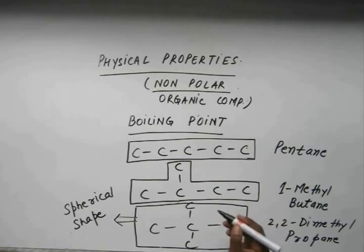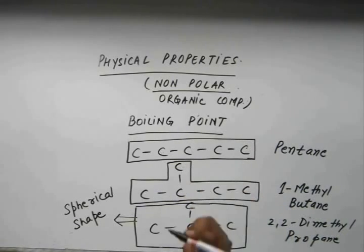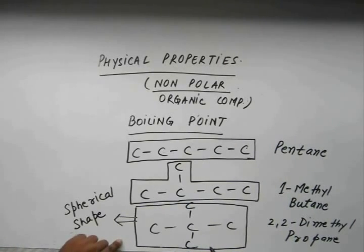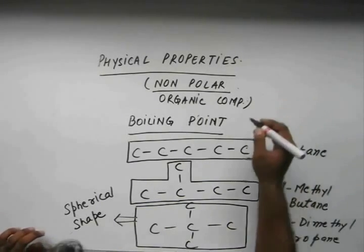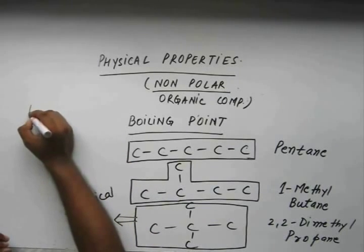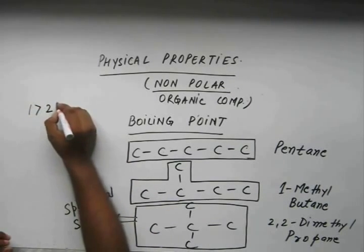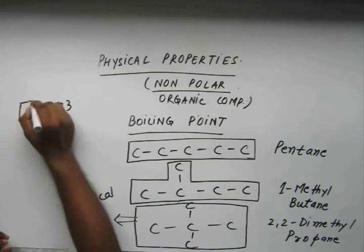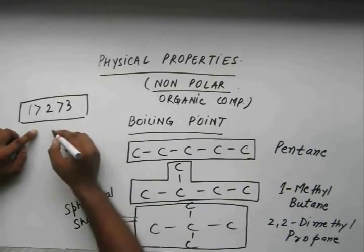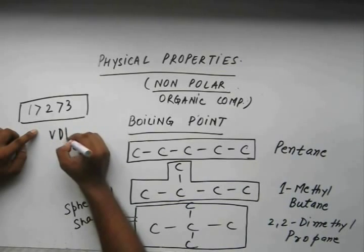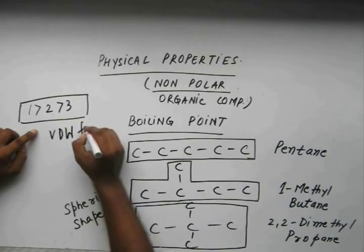If the molecule is more of a spherical kind, its surface area will be less, thus reducing its Van der Waals force and thus its boiling point reduces. The order of boiling point is: 1 greater than 2 greater than 3. This can be explained on the basis of Van der Waals forces.